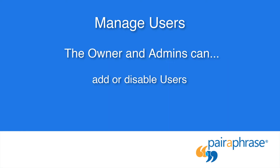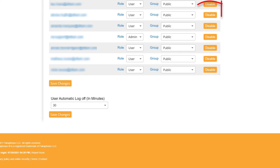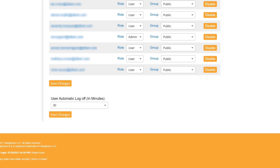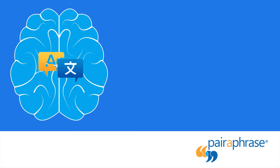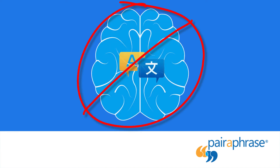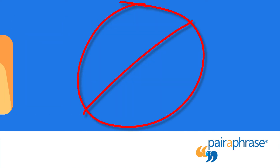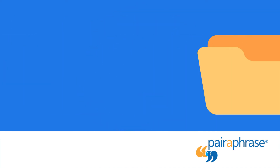Admins can add or disable users and assign translation memories to users. Clicking Disable will disable a user's access to your account. They will no longer be able to access your organization's translation memories, data, or files within Paraphrase.